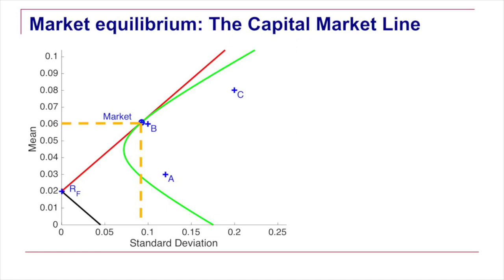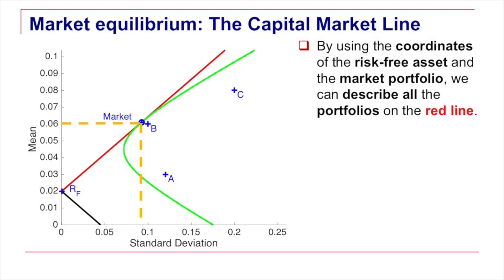The slope here is measured by how much you move up when you move to the right, how much additional return you get by taking additional level of risk. And for the red line, the efficient frontier, we can use the coordinate of the market portfolio to completely describe the slope of the red line.